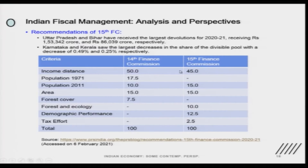Based on this weighting pattern it has been found that Uttar Pradesh and Bihar received the largest devolution in 2020-21, receiving rupees 1,53,000 crore and 86,000 crore respectively. Karnataka and Kerala saw the largest decrease in the share of the divisible pool, with a decrease of 0.49 and 0.25 percent respectively.